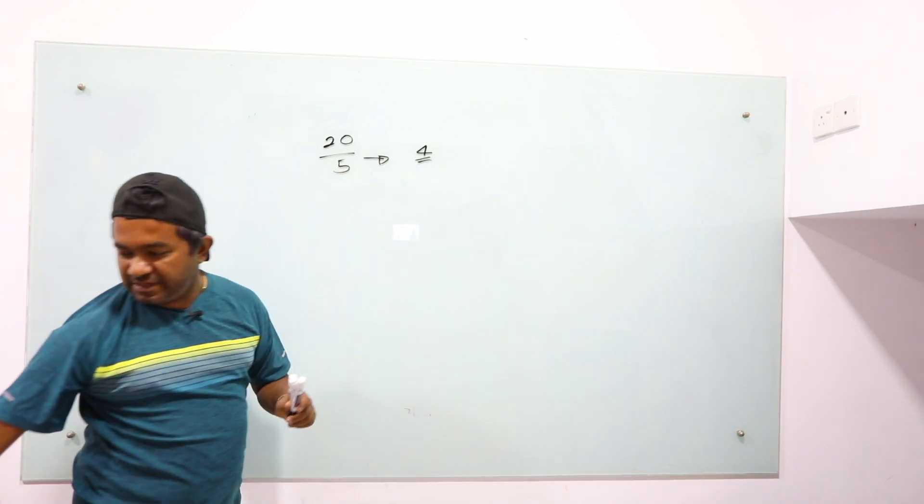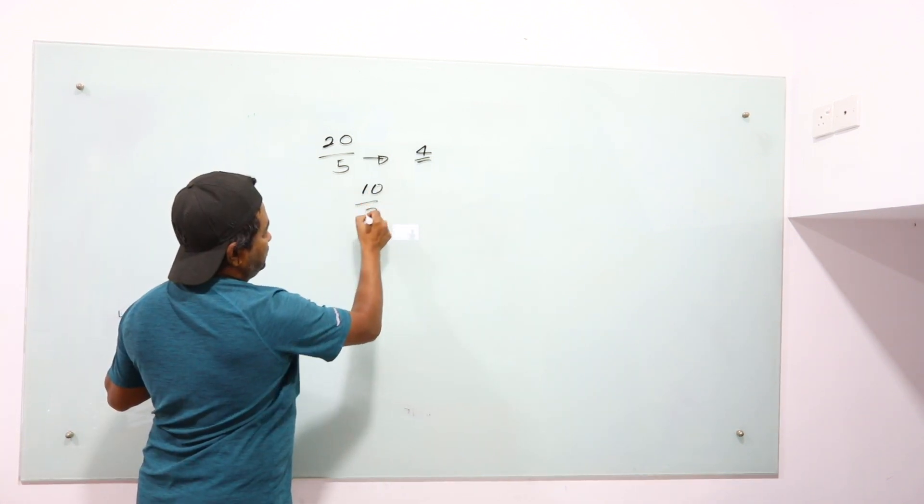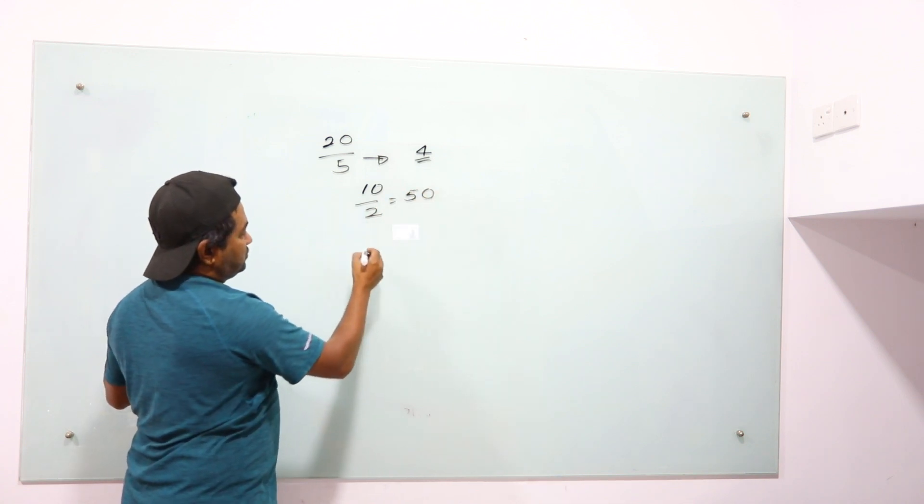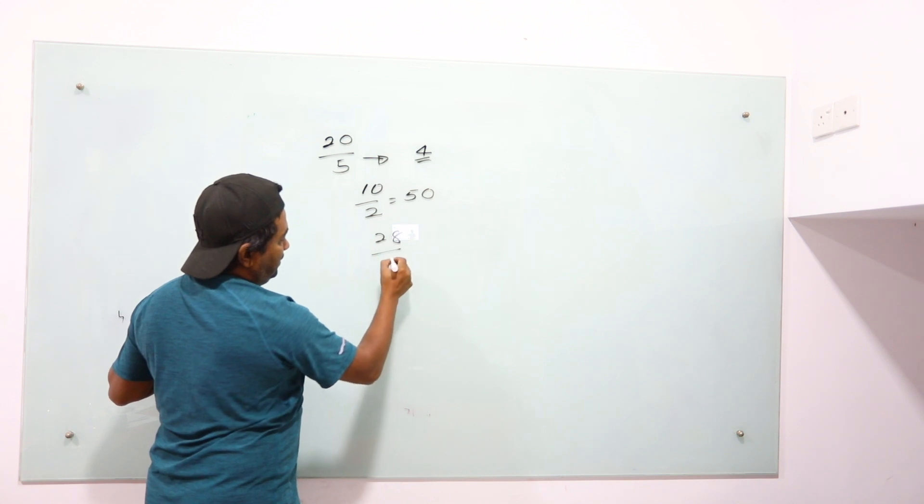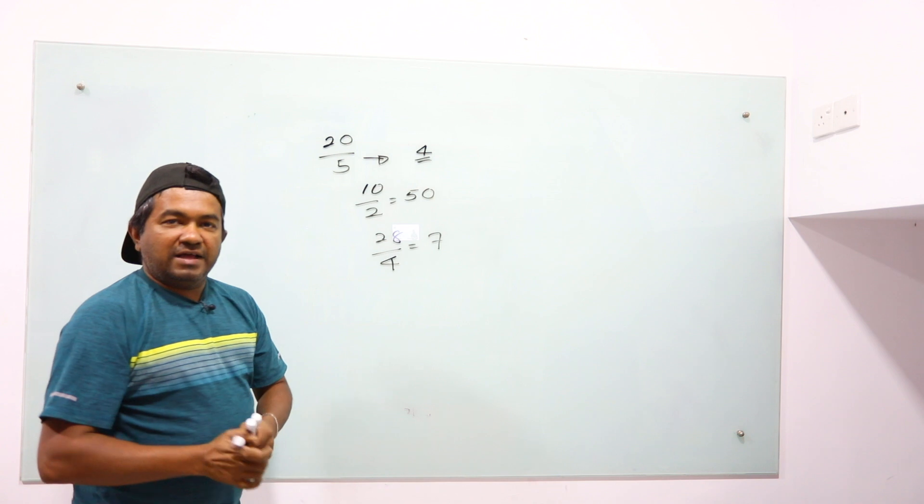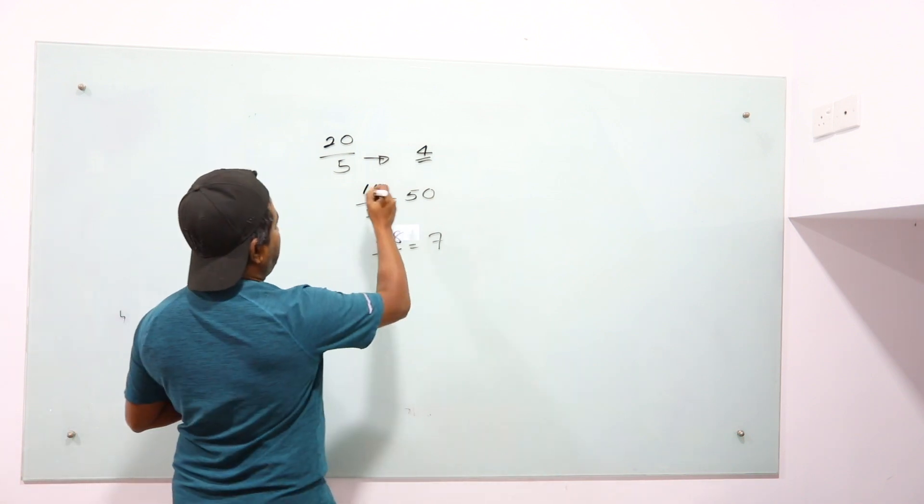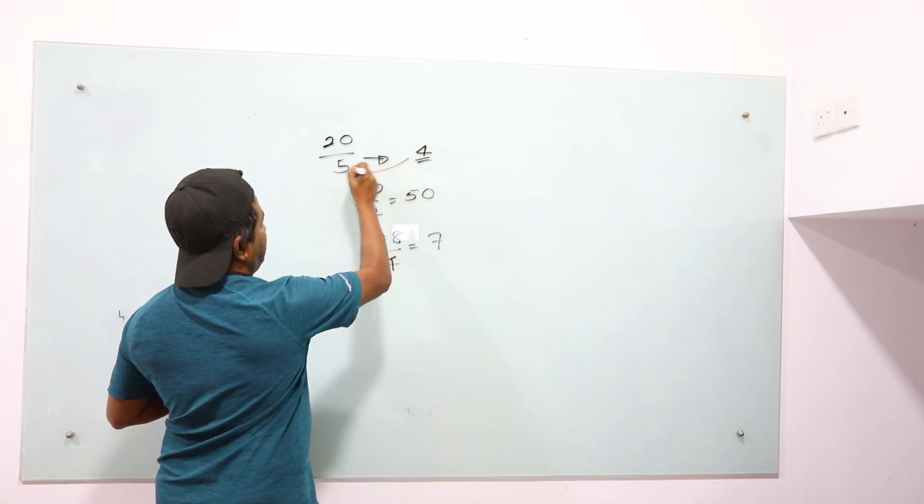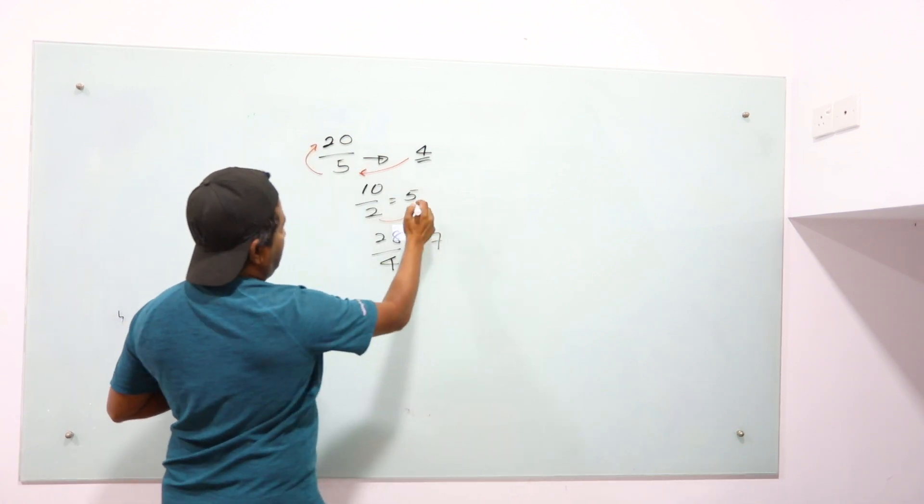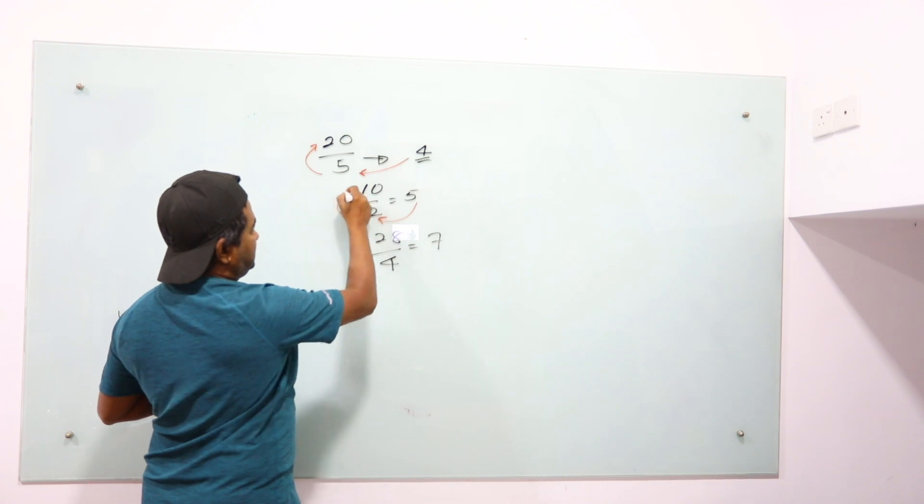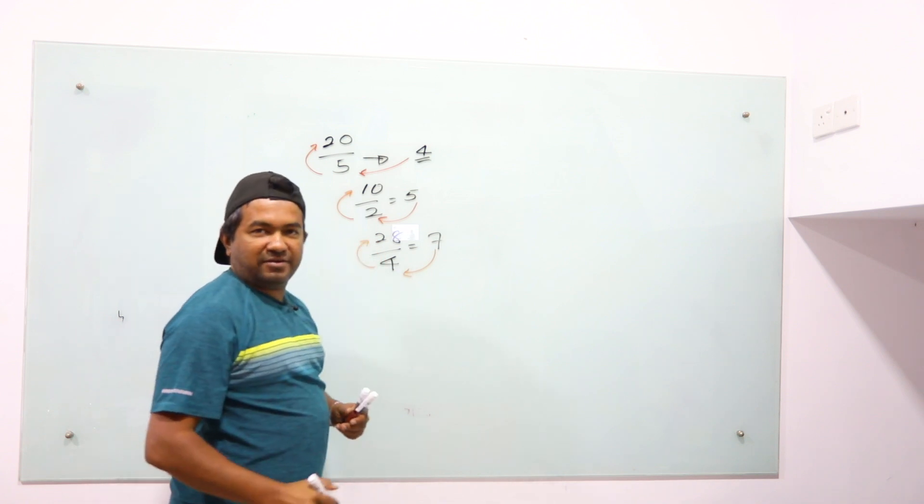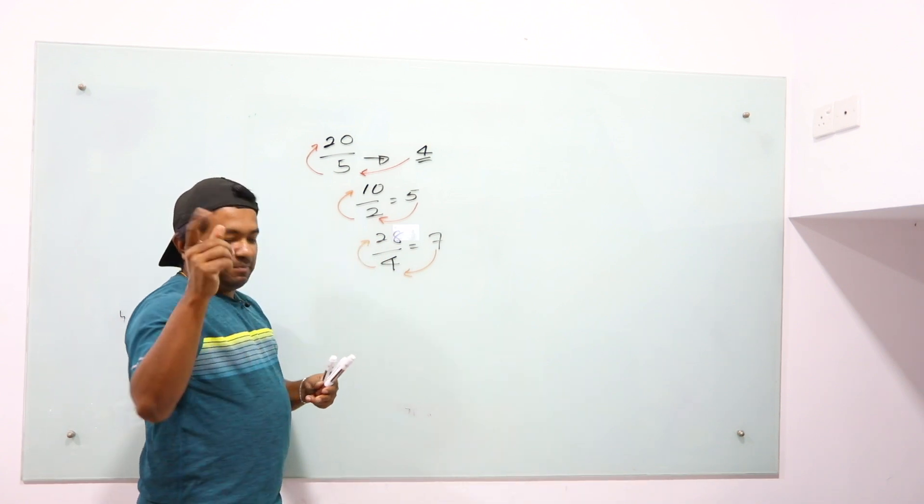So now the problem is this: 10 divided by 2 is 5, and 28 divided by 4 is 7. But same way, this works the other way around. 4 times 5 is 20. 5 times 2 is 10. 7 times 4 is 28, right? So that's how it works. But see this: